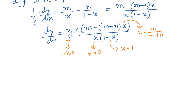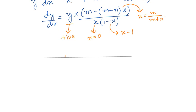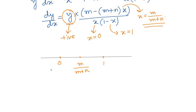For the sign sequence of the derivative, we plot the critical points: x = 0, x = m/(m+n) (which lies between 0 and 1 since m and n are natural numbers), and x = 1. We take a test point, say x = 2, to determine the sign in the rightmost interval.